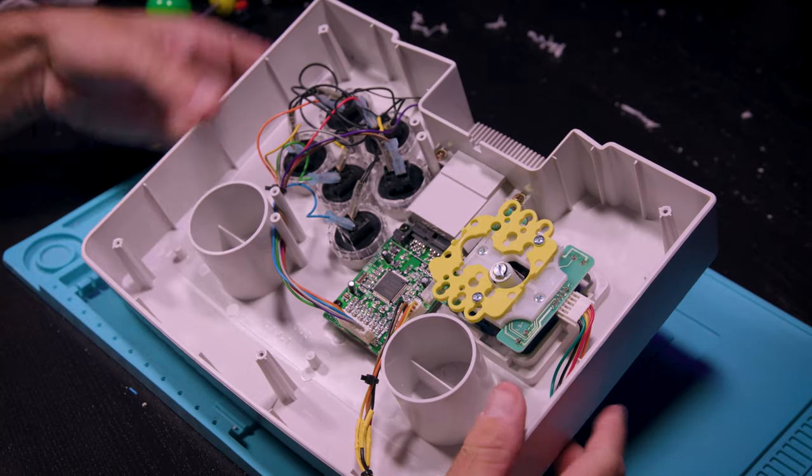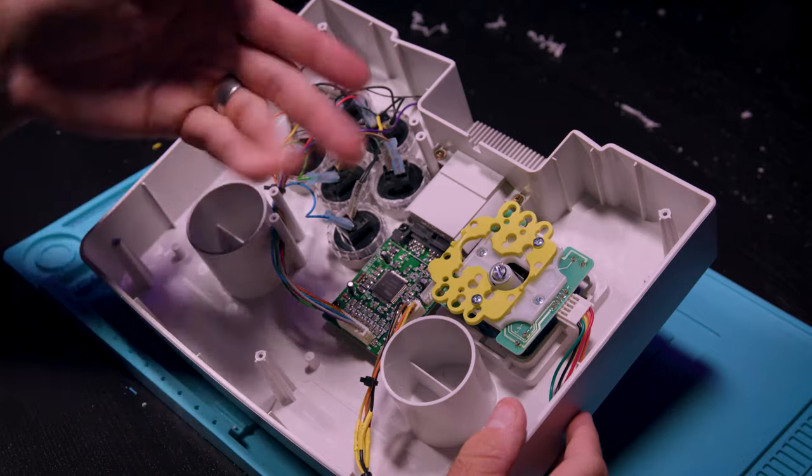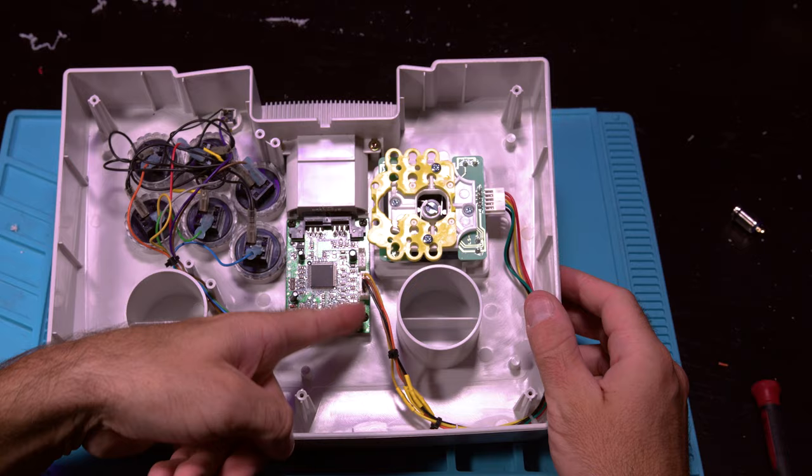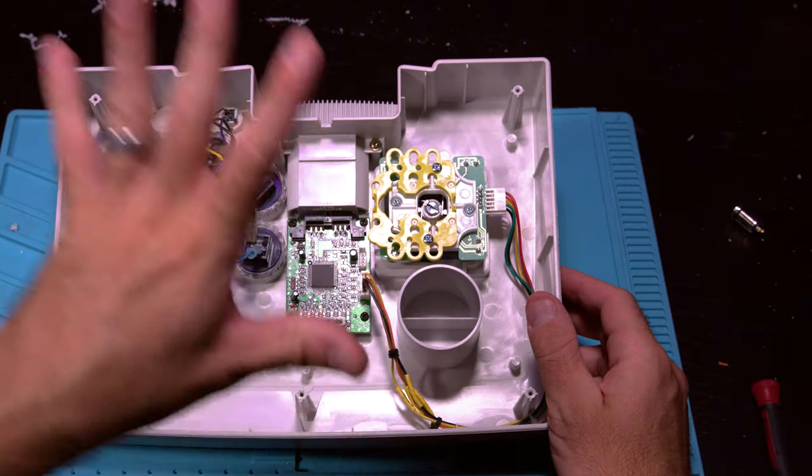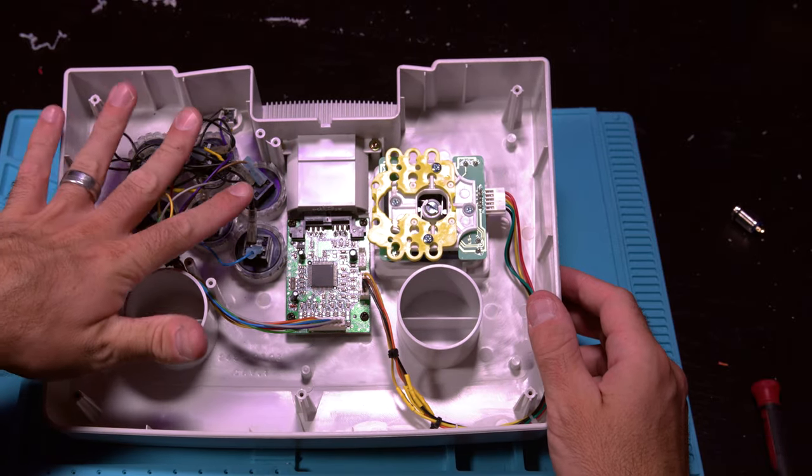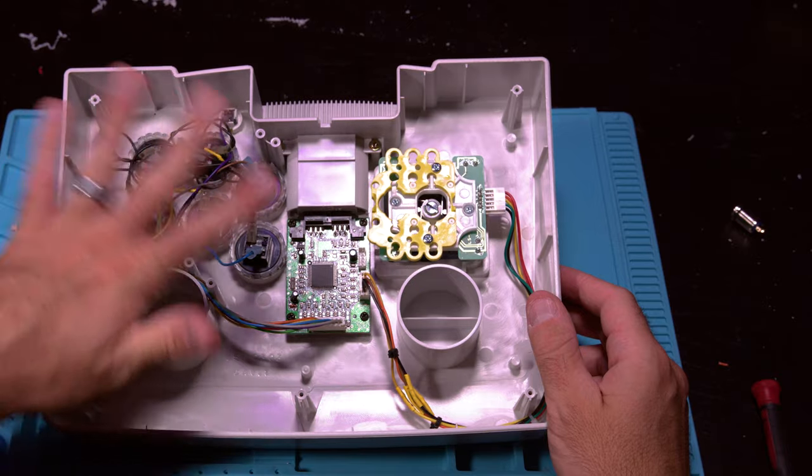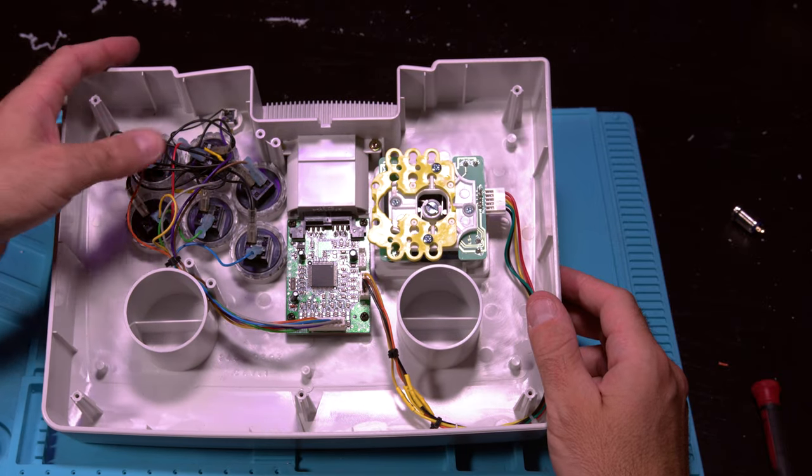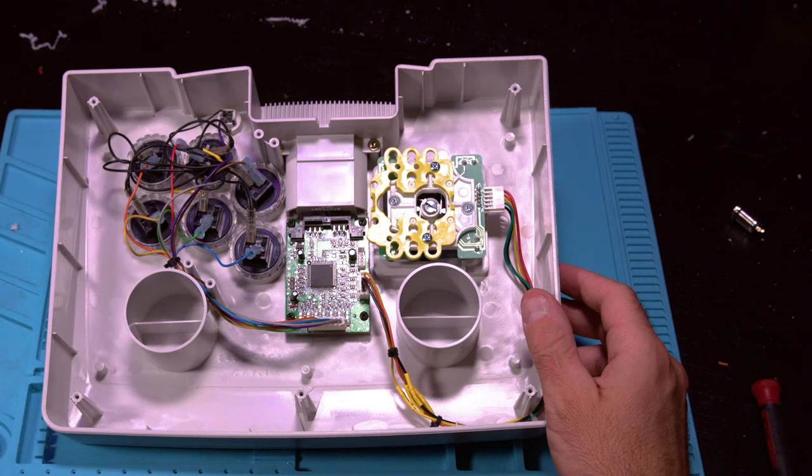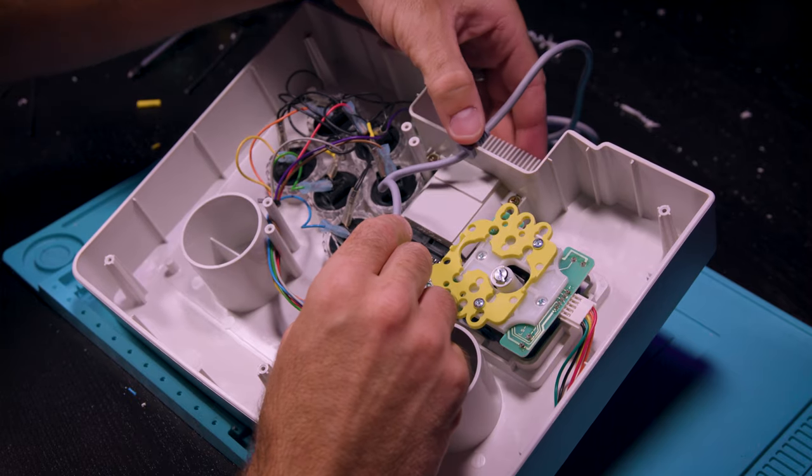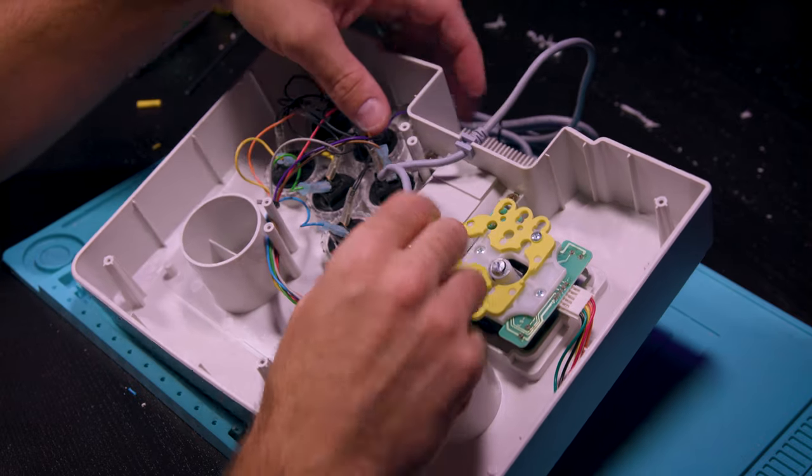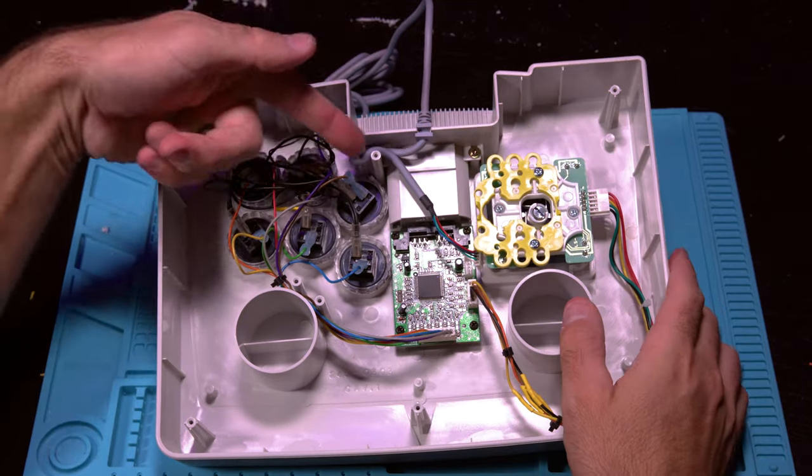Now we have our button harness plugged back in. We have our joystick harness plugged back in. Both of them are routed so they're not going to get pinched by the top plate. The prongs of the buttons are bent over so they're not going to touch anything. So the last thing is we're just going to plug our Dreamcast cable back in just like that.